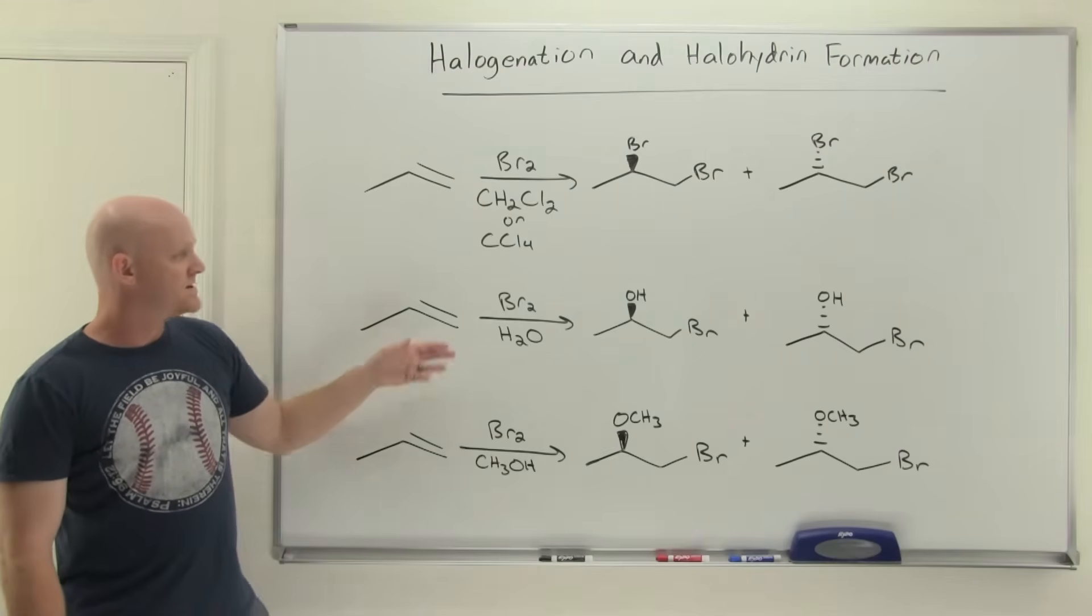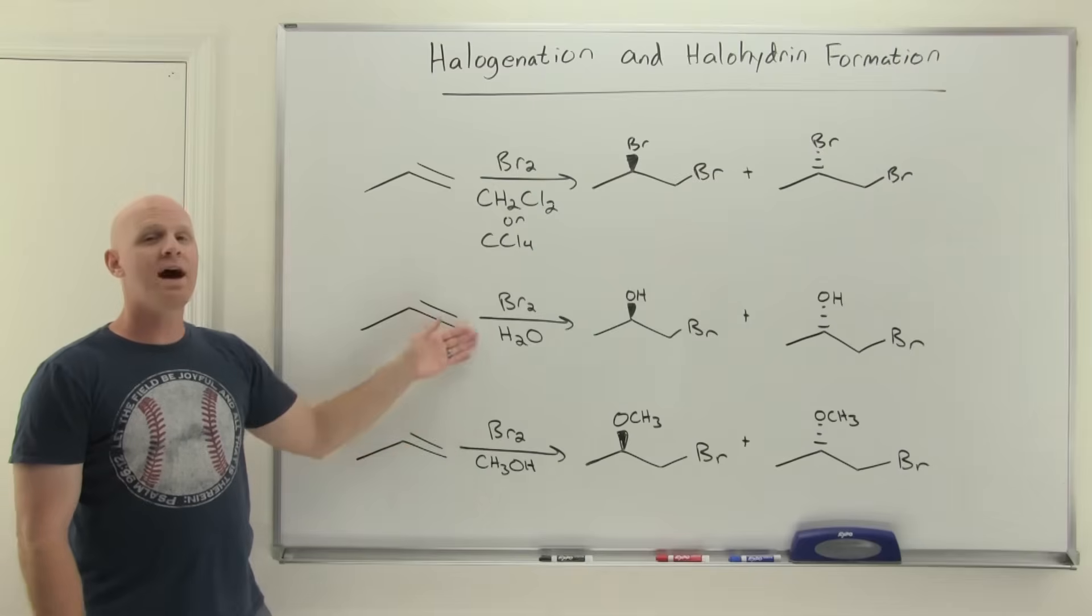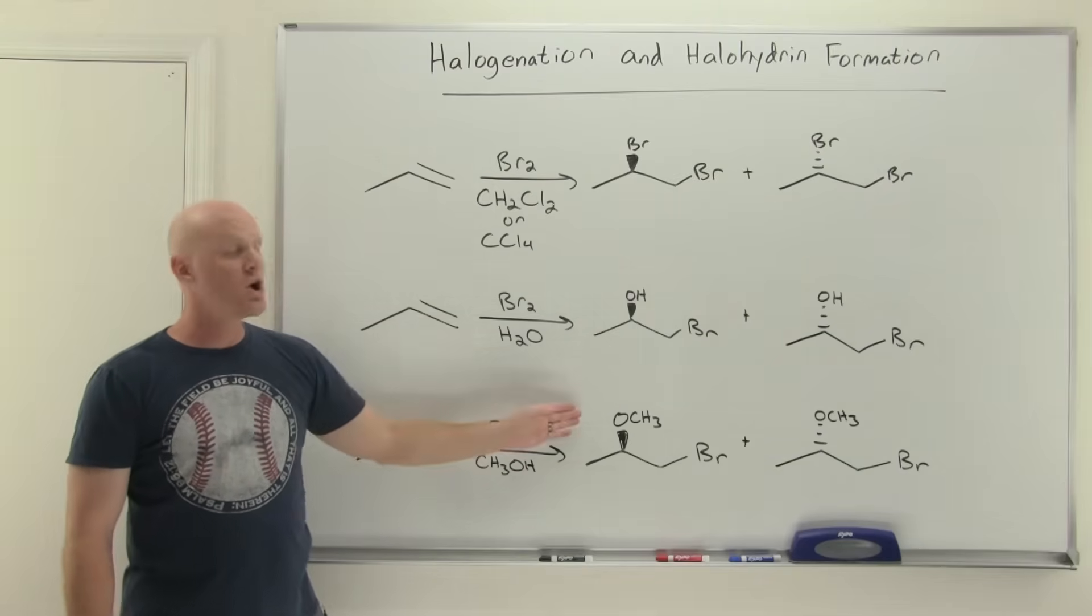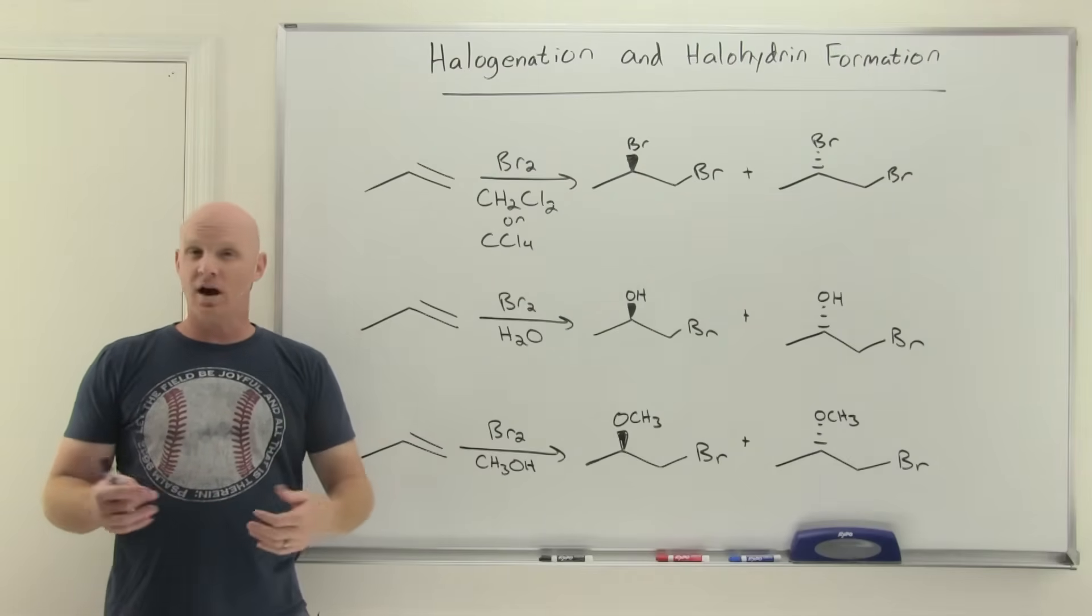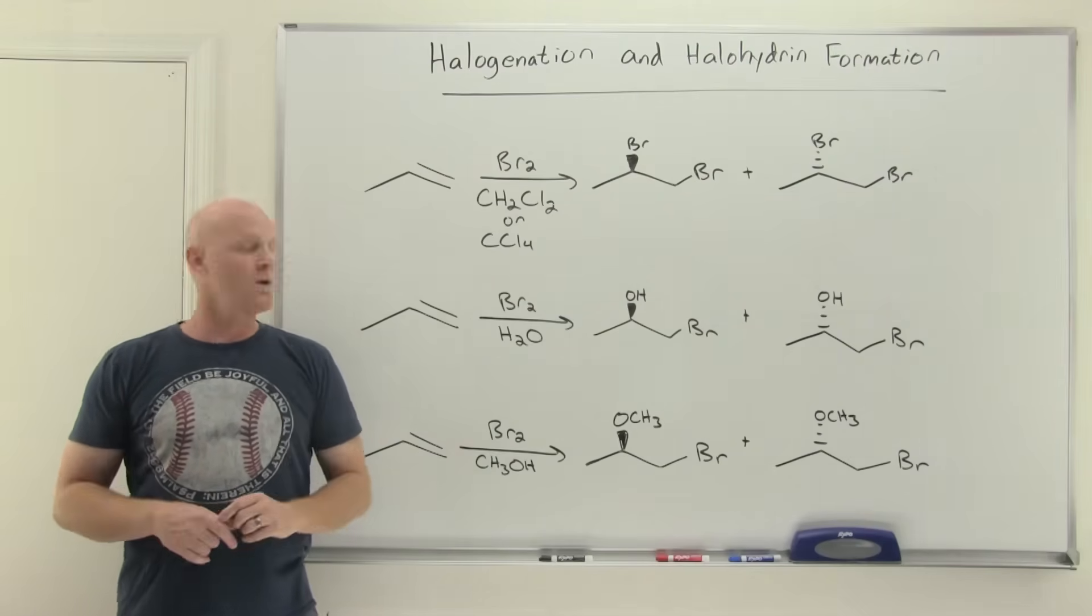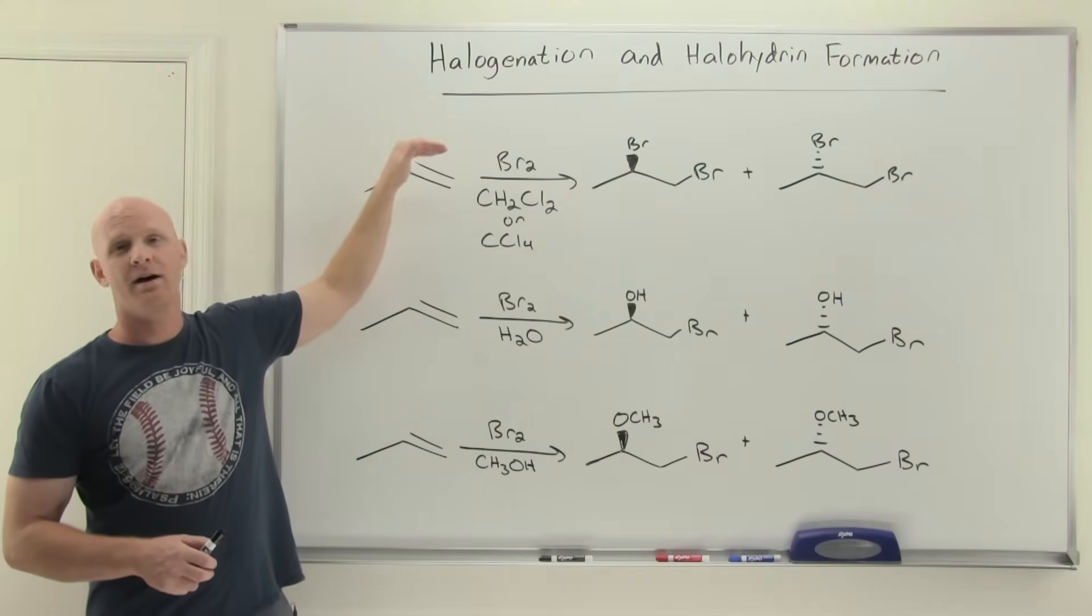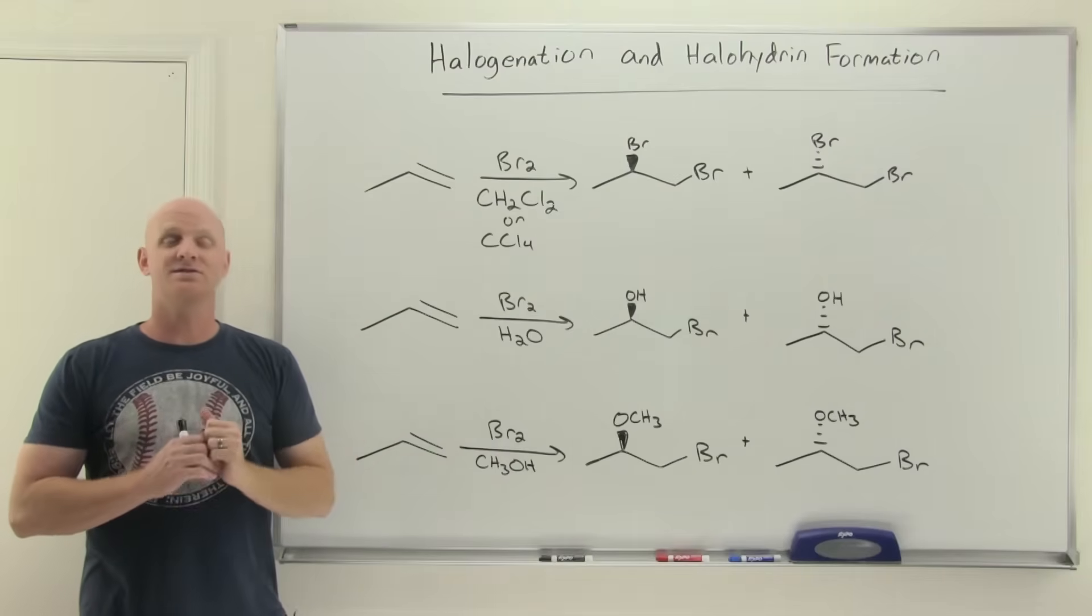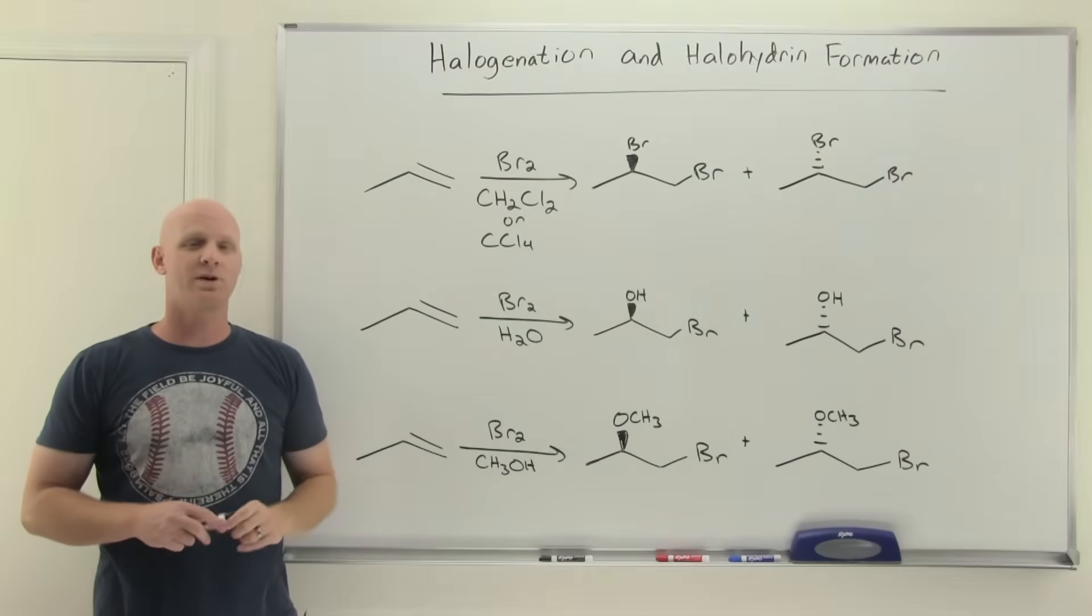For halohydrin formation, instead of carrying the reaction out in an inert solvent, we carry it out in either water or an alcohol. In that case, you're still going to add a bromine, but potentially an OH or an OR group across the alkene instead. We'll find out that it is Markovnikov addition, which will be a little bit tricky of what that exactly means, but we'll definitely cover that. We'll also find out that just like halogenation, it is also an anti-addition, and just like halogenation, it does not go through a carbocation intermediate, and therefore is not subject to rearrangements.